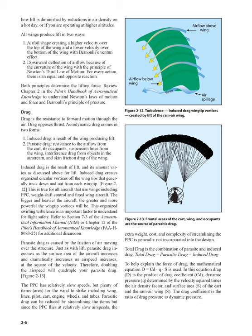Drag is the resistance to forward motion through the air and opposes thrust. Aerodynamic drag comes in two forms: induced drag, a result of the wing producing lift; and parasite drag, resistance to the airflow from the cart, its occupants, suspension lines from the wing, interference drag from objects in the airstream, and skin friction drag of the wing.